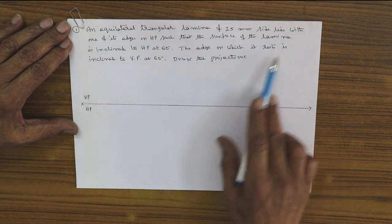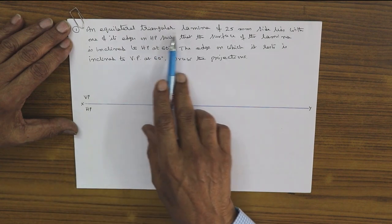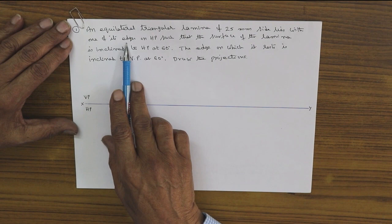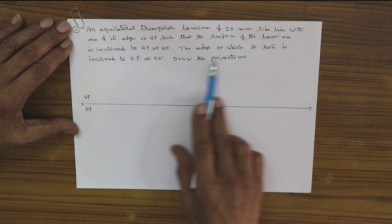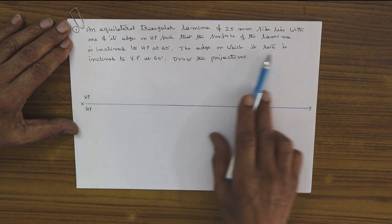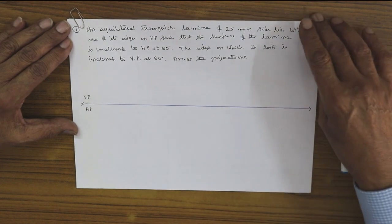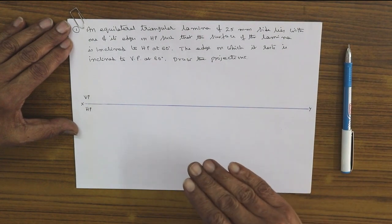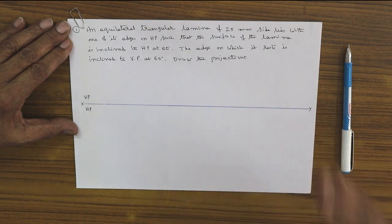If you carefully study the data given in the problem, it clearly says the triangular lamina is resting on the edge, not on the corner. Please note it is resting on the edge of the lamina, not on the corner. The entire surface is inclined to HP at 60 degrees, whereas the standing side is inclined to VP at 60 degrees. The standard rule: surface inclines first step, side inclines second step.